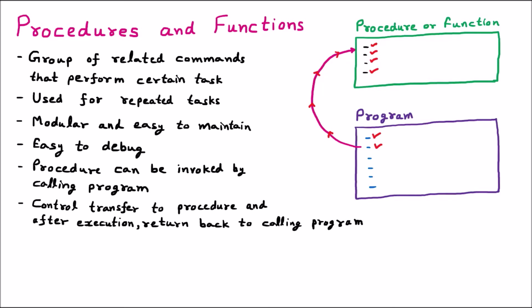When the program calls the procedure, the program cannot execute afterward — it is the turn of the procedure. When the procedure completes its execution, it comes back to the program, and the program can move forward with its upcoming lines. To understand: let's say I am the program and you are the procedure. If I am working and then I call you, I will be on hold. You will perform your task, then send me the control back so I can continue. This is how the control is shifted.